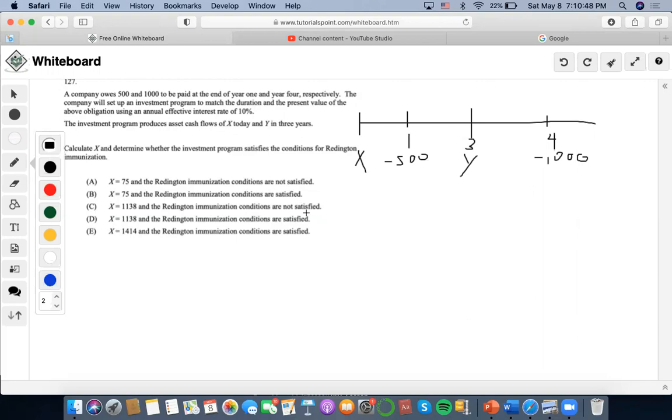The first thing I'm going to do is find the first condition of Reddington immunization: that the present value of assets equals the present value of liabilities. So I'm going to find the present value of the liabilities.